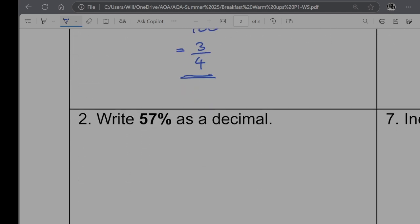Question two. Write 57% as a decimal. So 57% means 57 out of 100. So as a decimal that's just going to be 0.57.